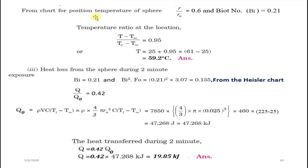For r/R₀ = 0.6 and Biot number 0.21, going to the second graph for the sphere, we get (T − T∞)/(Tc − T∞) = 0.95. From this, T = 59.2°C.